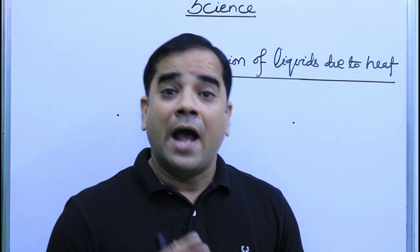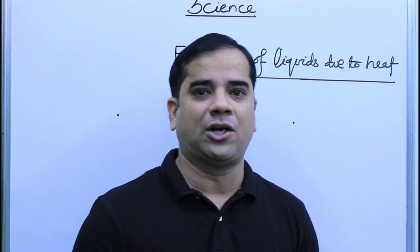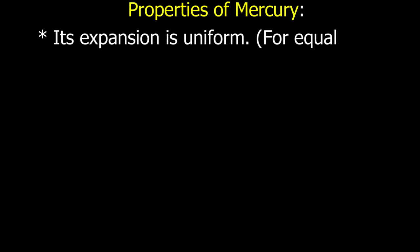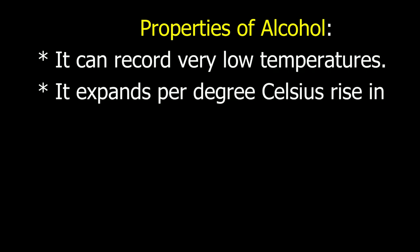Other than mercury, alcohol is also used in thermometers. Let us discuss the properties of mercury. Its expansion is uniform — for equal amounts of heat it expands by equal lengths. It is opaque and shiny. It does not stick to the sides of the glass tube. It is a good conductor of heat, and it is easily available in a pure state.